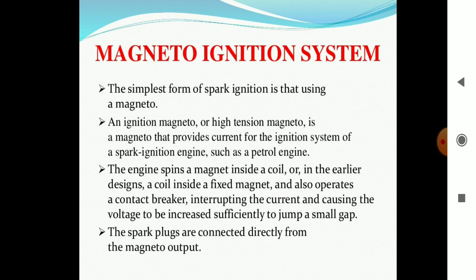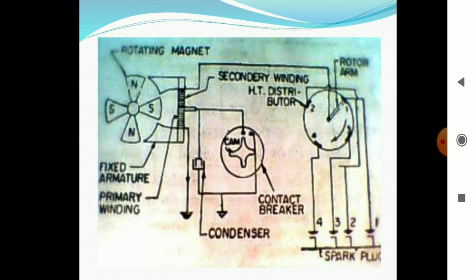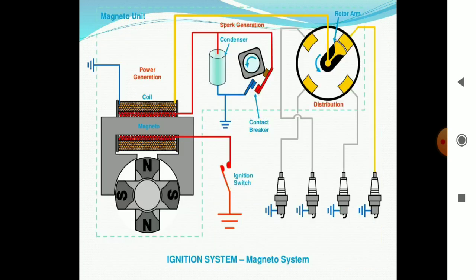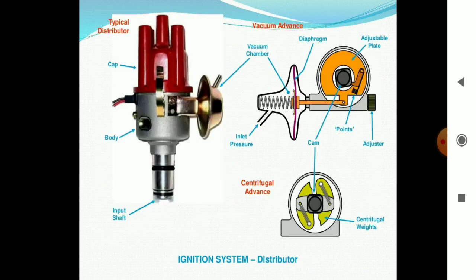It also operates the contact brake to interrupt current and causes the voltage to be increased sufficiently to jump a small gap. The spark plugs are connected directly from the magneto output. These are the sample working diagrams for the four-stroke combustion for the particular spark ignition system and also some colored diagrams to clearly visualize the parts of coil, ignition switch, contact breaker circuit, and condenser.